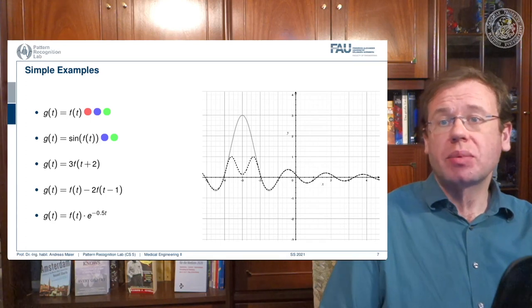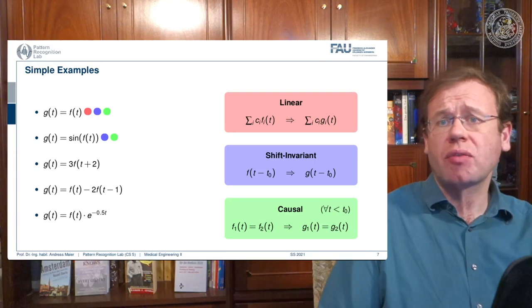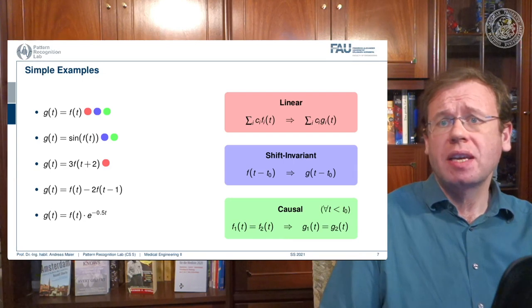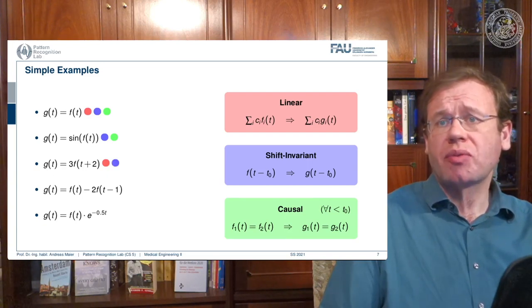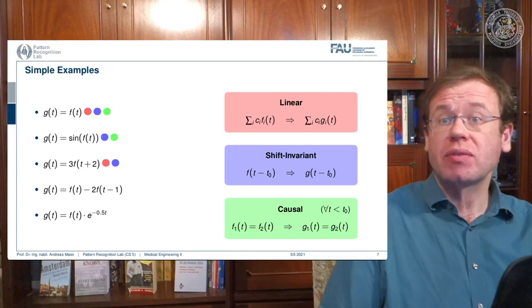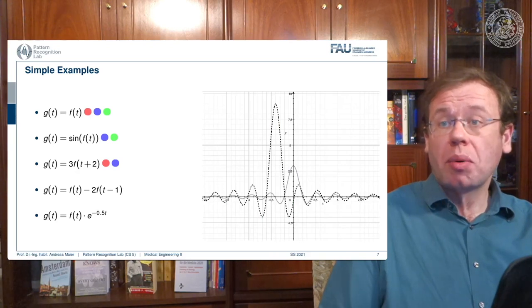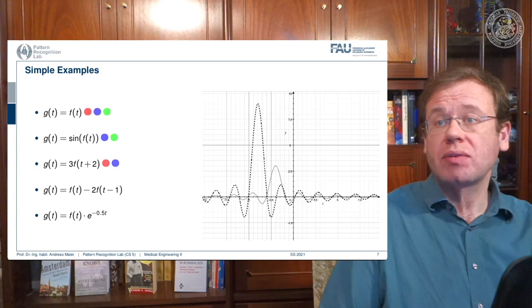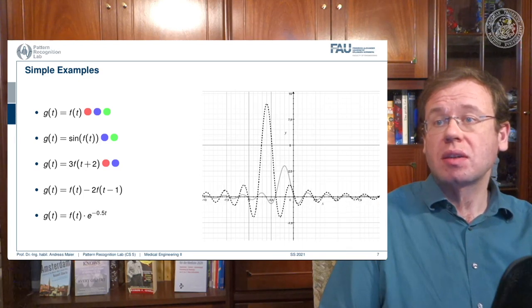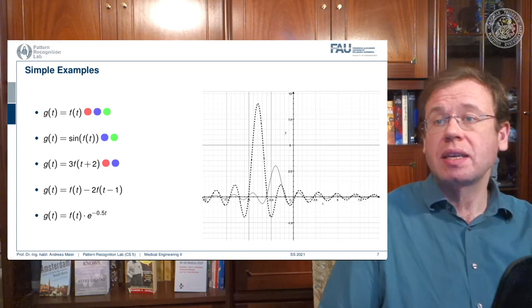The third example is just multiplying by three and applying a shift of plus two. This is actually linear because we just have additions and multiplications - the weighted sum would not be changed. This is also shift invariant because shifting before and after doesn't change anything. But it's not causal - I add two in the index, which essentially means I have to shift the function into the future. So this is a non-causal example. You can see in the plot that the central lobe of the sinc is moved to the left, meaning to compute the output you have to access the future. So here we have an example that is non-causal, linear, and shift invariant.